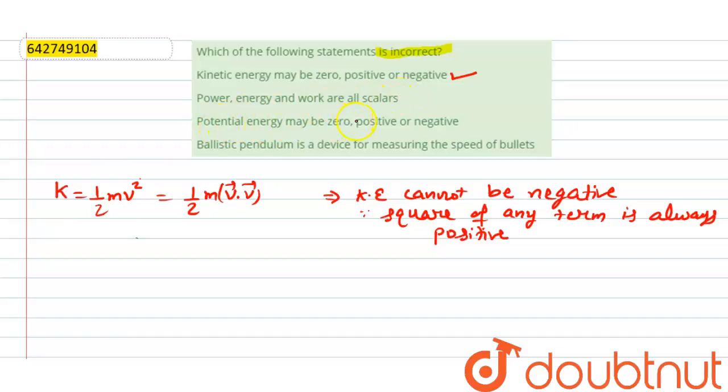Potential energy may be positive, zero or negative. Yes, potential energy can be positive, zero or negative because potential energy due to gravity, when object moving downward, it can be negative, positive or zero. It depends on object is moving from which point to which point, from which height to which height.